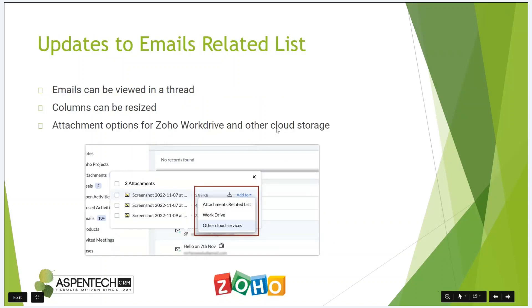Updates to the emails related lists: emails can now be viewed in a thread as opposed to all individual emails listed separately, which helps organize and clean up that list. You can also resize the columns in the related list — for example, make the subject column much wider than the date column. You also now have attachment options for Zoho WorkDrive and other cloud storage tools, so attachments within emails stored in CRM can easily be saved out to WorkDrive or other cloud storage services.